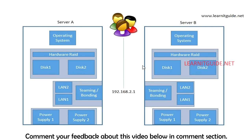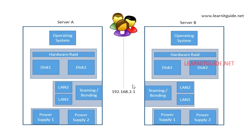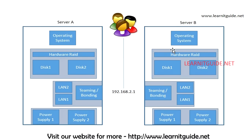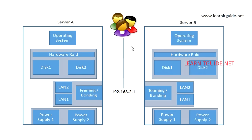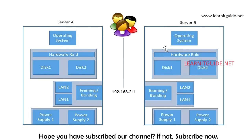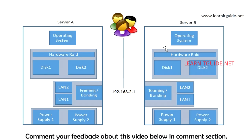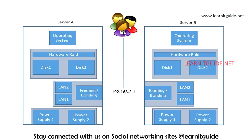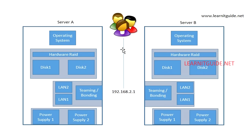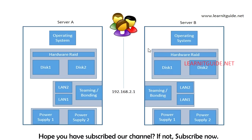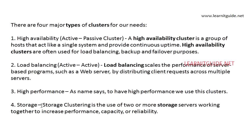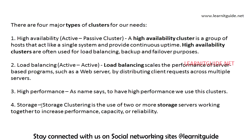If something goes wrong with Server A in an active-active setup, clients can still access services via Server B. The drawback is that at that point only 100% capacity is available instead of 200%. Once Server A comes back up, you regain 200% performance. This is what active-active load balancing clusters provide — all nodes configured in the cluster remain active.